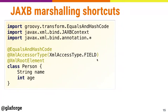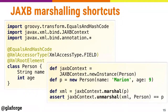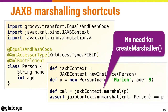For those using JAXB for marshalling: instead of doing JAXBContext, createMarshaller, marshall each time, there's now a shortcut. If you're reusing the marshaller, it's better to call createMarshaller explicitly. But for a one-off, you can just do JAXB.marshall instead of createMarshaller then marshall. It's a small convenience shortcut.